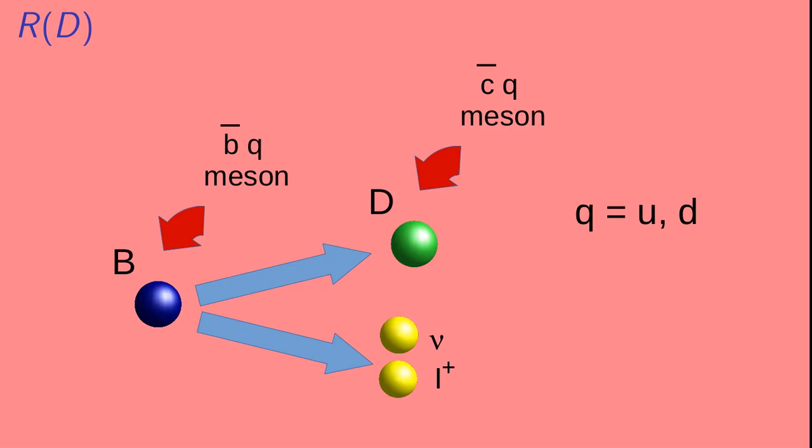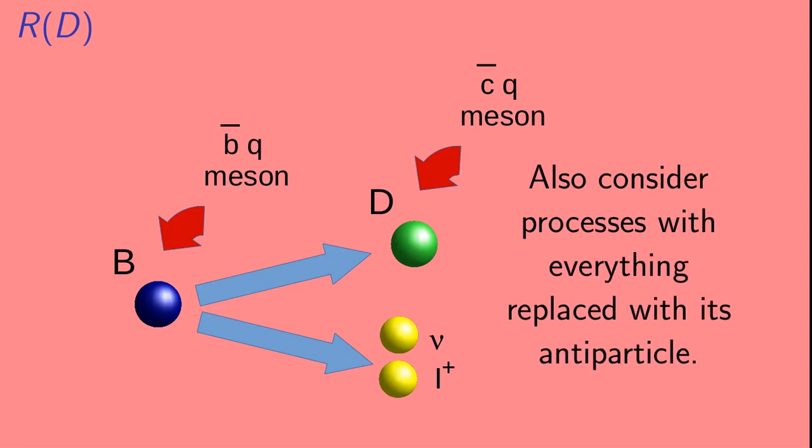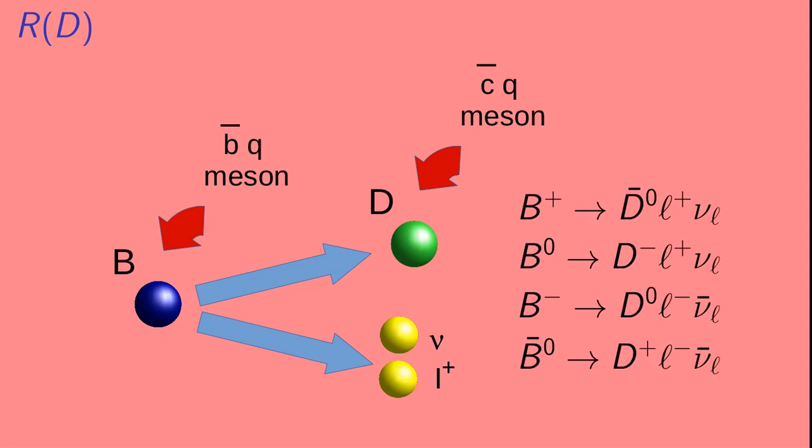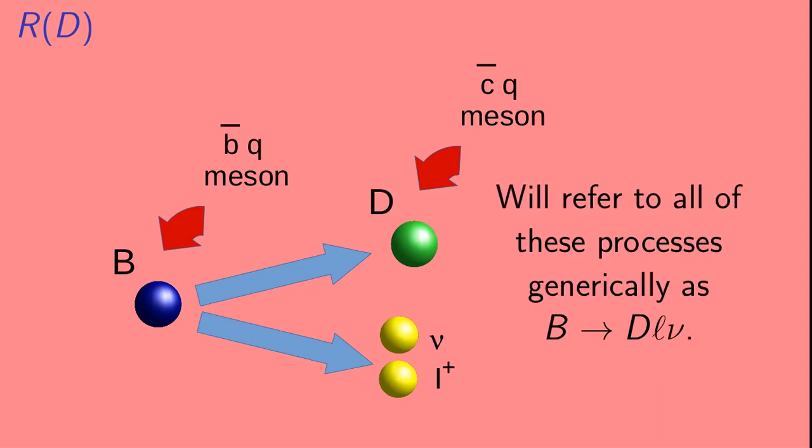When people talk about B mesons, they typically are referring to the case where the other quark is an up quark or a down quark. If it's an up quark, the B meson is a positively charged B plus, and the D is a neutral particle called a D zero bar. If the quark is instead a down quark, the B meson is a B zero, and the D meson is a D minus. Also, we're going to include processes where every particle in this diagram is replaced with its antiparticle. So, the cartoon we've drawn here actually represents four different decays, depending on what type of B meson you're starting with. We're going to refer to all of these processes generically as B goes to D L nu.